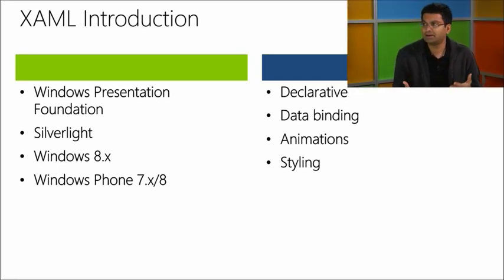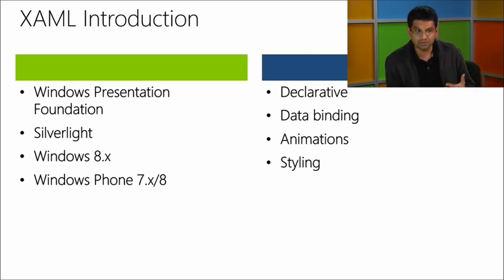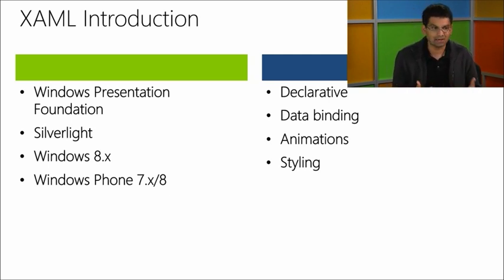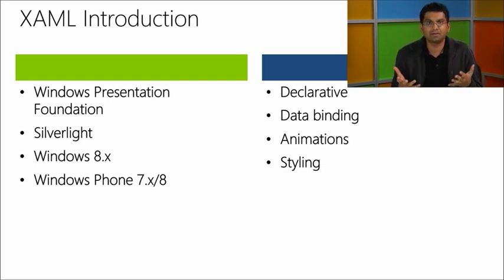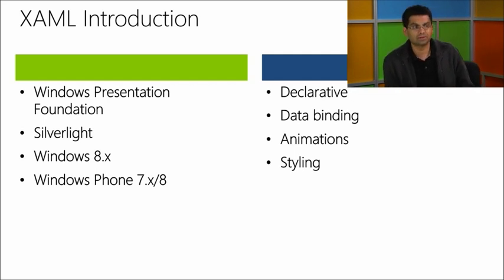If you're familiar with XAML, that's all you pretty much need to know — it's declarative. It has a ton of great features like the ability to do data bindings and animations. You can style your controls. The beauty of the entire thing is you can build an app using declarative UI and then write some code that ties together different UI constructs. So it's a really powerful, declarative way of creating user interfaces.